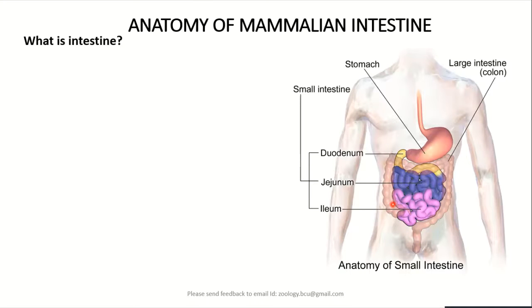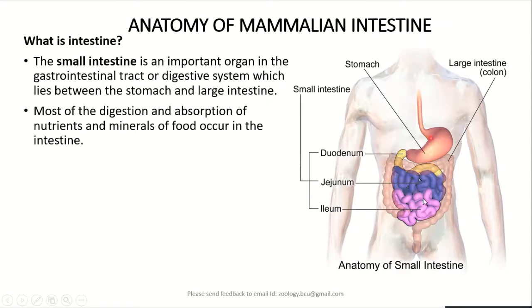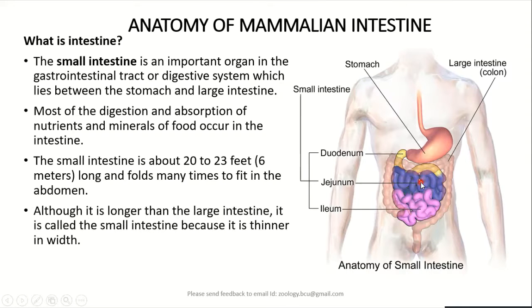What is the small intestine? The small intestine is an important organ in the digestive system of an animal, which lies between the stomach and the large intestine. Most of the digestion and absorption of food occurs in the small intestine. It is about 20 to 23 feet long and folds many times to fit in the lower abdomen. It is called small intestine because of its smaller width or radius.